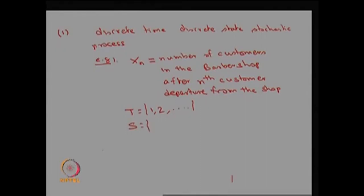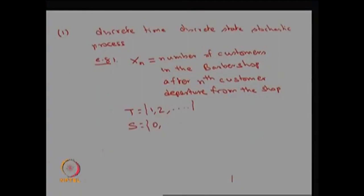The possible values of Xn: for any value of n, there is a possibility of no customers in the system when someone leaves, so it could be 0, or 1, or 2, and so on. Therefore there is a possibility it could be countably finite. Capital S can be countably finite or countably infinite — in this case we assume countably infinite. Therefore the stochastic process Xn for n = 1, 2, ... is a discrete time discrete state stochastic process.